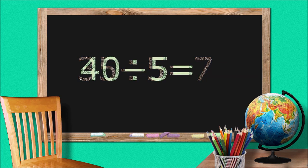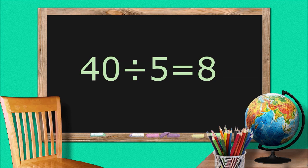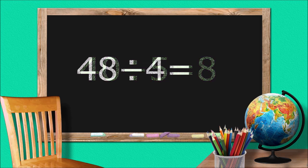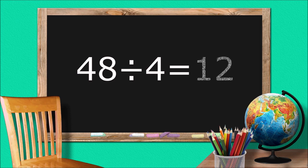Forty divided by five equals eight. Forty-eight divided by four equals twelve.